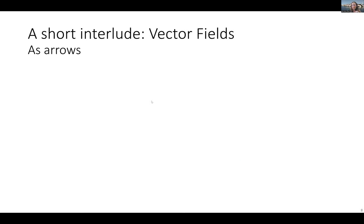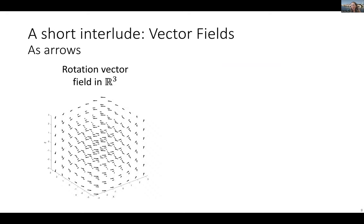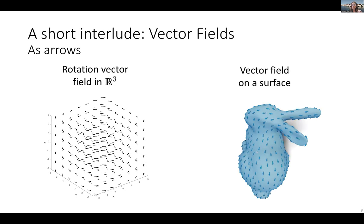Let's do a short interlude about vector fields. We are all in graphics and are aware of rotational vector fields. A rotation vector field in R3 means that at every place in my cube, I have a small arrow telling me which direction to go. Analogously on the surface, at every point on my bunny I also have a small arrow, but it is constrained to the surface — I can only go along the bunny, not up. I'm working with tangent vector fields, which means all directions are like how an ant would walk on the bunny — it cannot fly.